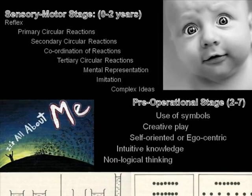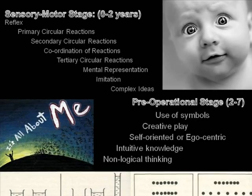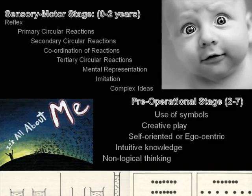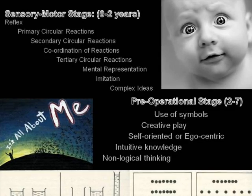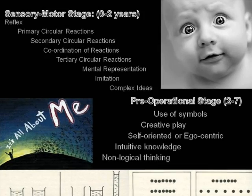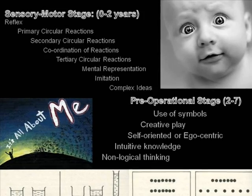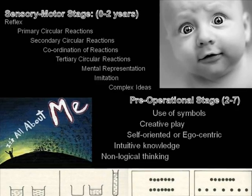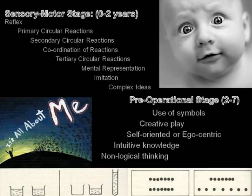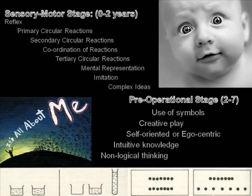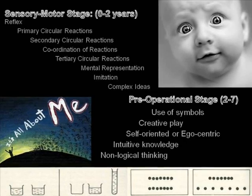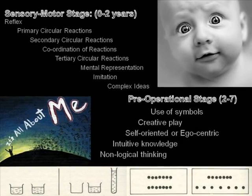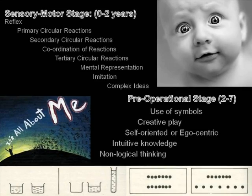At the pre-operational stage, kids are now understanding symbolic representations such as language and creative role-playing. However, at this stage, kids are highly egocentric and their knowledge is very intuitive and non-logical. Take a look at the two images at the bottom of the screen. If the liquid is poured from the short and wide jar into the tall skinny one, a pre-operational child would not understand that they are still of equal volume. Likewise, a pre-operational child will answer that the line of dots on the bottom has more dots in it simply because it is more elongated than the line above.